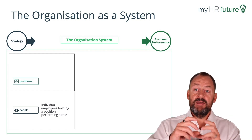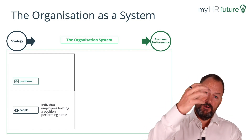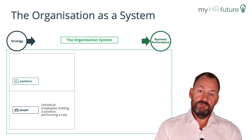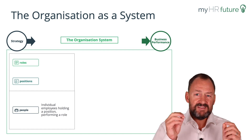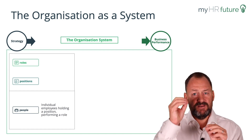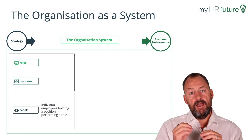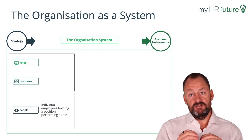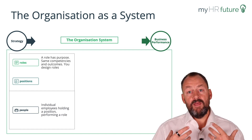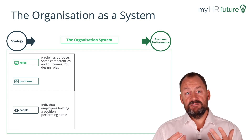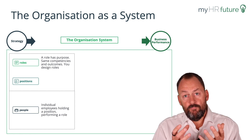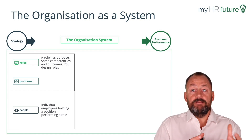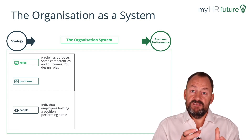The way we organize people is they are in positions, and positions are broken into roles. It's important to understand the distinction between a role and a position. A role has purpose — they do the same work and have the same sets of competencies and drive the same outcomes.